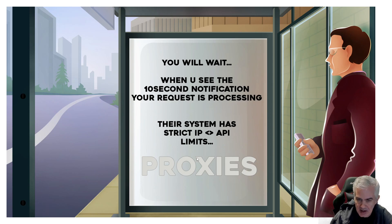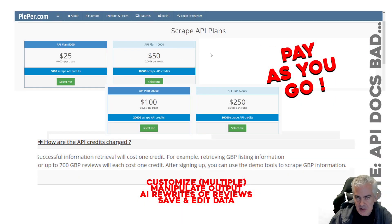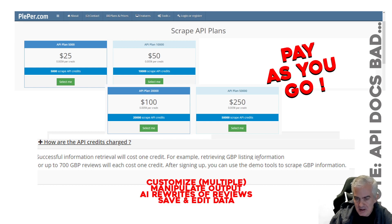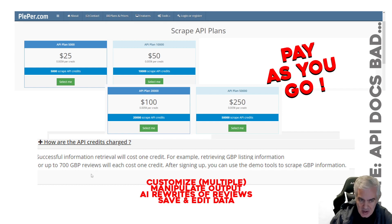Their system has a strict IP to API limit, so you have to deal with that if you're going to be doing a lot of reports. The API pricing is fair — it's half a cent a credit regardless of how many you buy, and credits last until you use them, so it's pay-as-you-go. Retrieving GBP listing information for one GMB, or up to 700 GBP reviews, each costs one credit. So 700 reviews downloaded to your computer: one credit, half a cent. Run 50 of them: 25 cents.